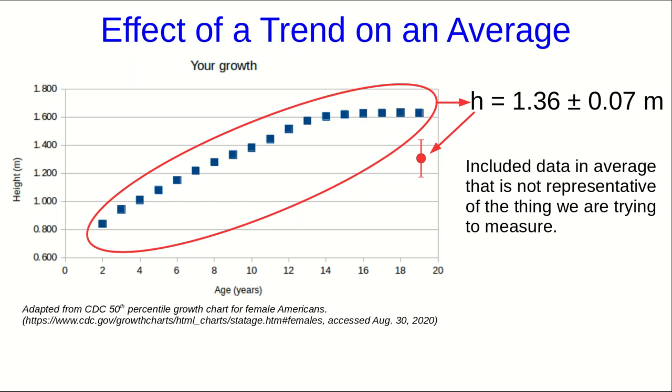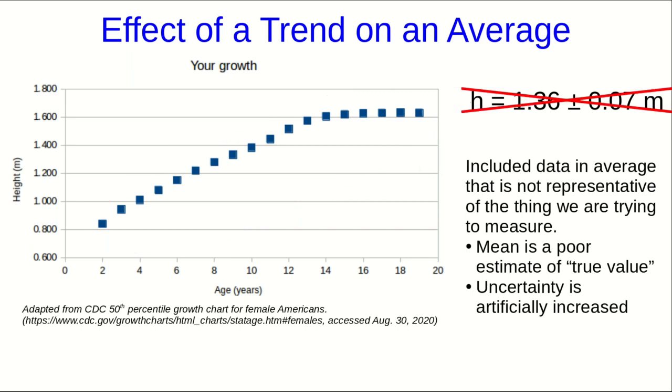We're trying to measure your current height. But your height when you were 2, 3, or 4 is not representative of your current height. And so we shouldn't have included it in the average. By doing so, we've made the mean a very poor estimate of the true value of the thing we actually want to know. And we've artificially increased the uncertainty. Because the uncertainty we're seeing is not just from measurement uncertainty, but from the fact that the underlying thing we're measuring has actually changed. So that's no good. What we should have done in this case is use just the last bit of data where your height seems to be roughly constant and get a best estimate and an uncertainty from that.